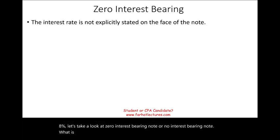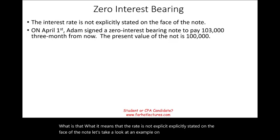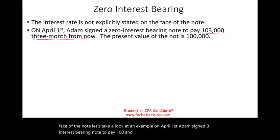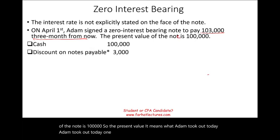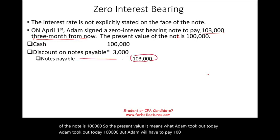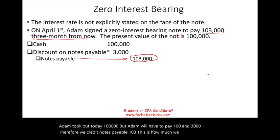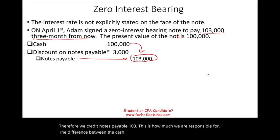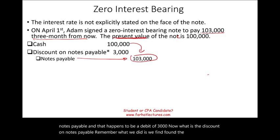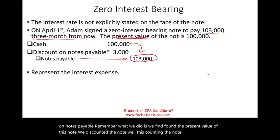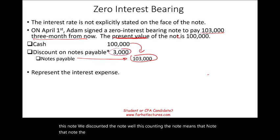Now let's look at a zero interest-bearing note — where the rate is not explicitly stated on the face of the note. On April 1st, Adam signed a zero interest-bearing note to pay $103,000 three months from now. The present value of the note is $100,000, meaning Adam takes out $100,000 today but will pay $103,000. We credit notes payable $103,000 and debit cash $100,000, with the $3,000 difference recorded as a debit to discount on notes payable — representing the future interest expense.